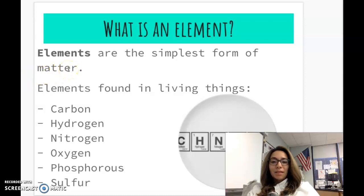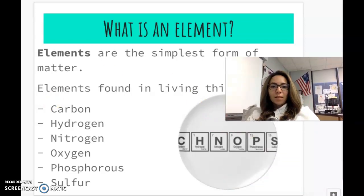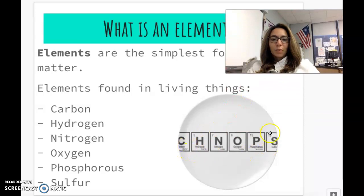Now, elements are the simplest form of matter, and elements that we're going to learn about that make up living things are carbon, hydrogen, nitrogen, oxygen, and phosphorus. So these elements, you can abbreviate them CHNOPS, C-H-N-O-P-S.